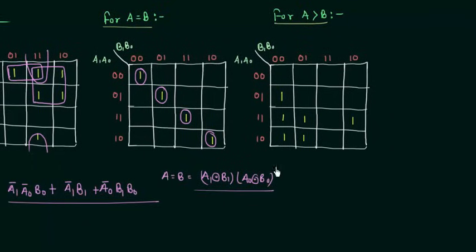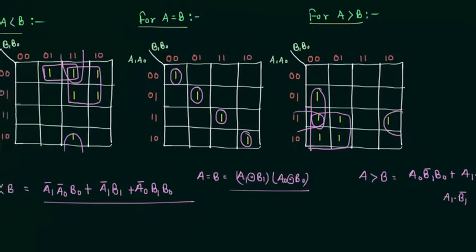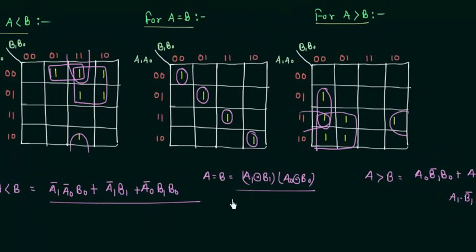Now let's move to the third output. In this, this is my first group, this is my second group, and this is my third group. So let's write down the expression for A greater than B and it is equal to A0 and B1 complement and B0 complement, or A1 A0 B0 complement, or A1 and B1 complement.